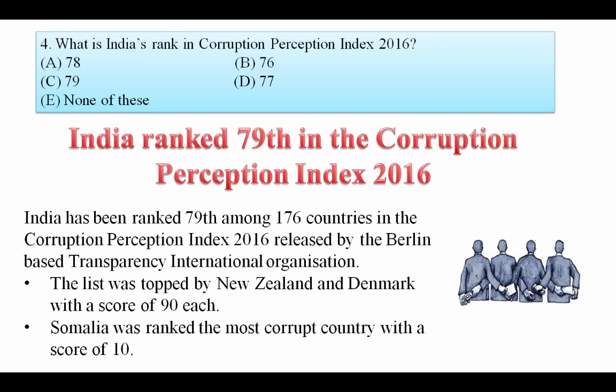What is India's rank in the Corruption Perception Index 2016? India ranked 79th in the Corruption Perception Index 2016, released by the Berlin-based Transparency International organization. You need to remember the headquarter is in Berlin. There are 176 countries, out of which India ranked 79th. Your answer is C. The list was topped by New Zealand and Denmark, and Somalia was ranked the most corrupt country with a score of 10.